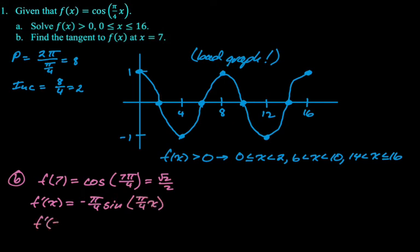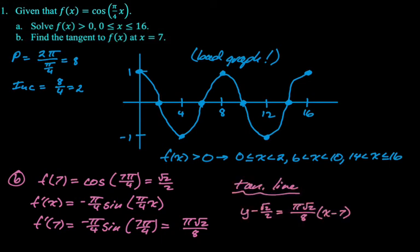We have to evaluate this at 7. So f prime of 7 is going to be negative pi over 4 and then the sine of 7 pi over 4. 7 pi over 4 is a fourth quadrant sine is negative. So it's going to be negative root 2 over 2 times negative pi over 4, so positive pi root 2 over 8. And then our tangent line in point slope form is y minus root 2 over 2 equals pi root 2 over 8 quantity x minus 7.